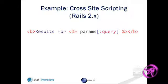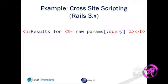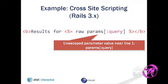Here's an example — a template using ERB, the default template. We're saying please put this query parameter into the page. For Rails 2.0 this would be a cross-site scripting vulnerability. In Rails 3 they escape by default, so you'd actually have to explicitly say please output this without escaping. If you run Brakeman against code like this you'd get a warning like 'unescaped parameter value,' along with the line number and the code as Brakeman sees it.